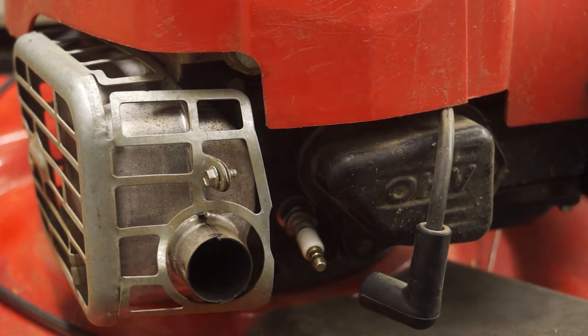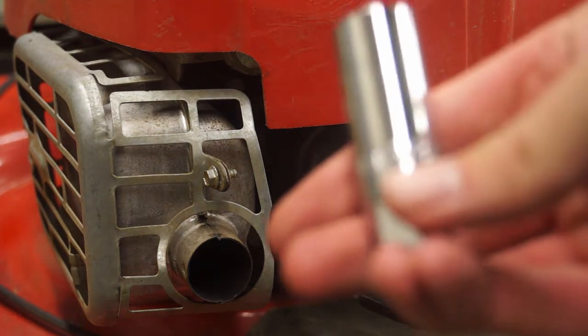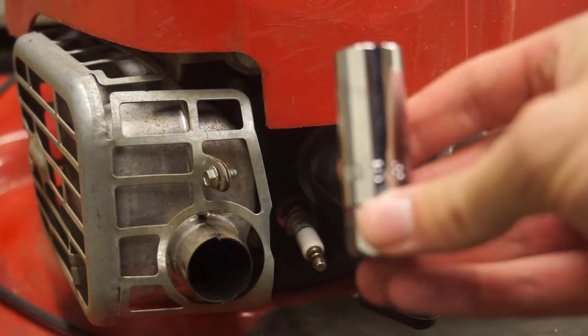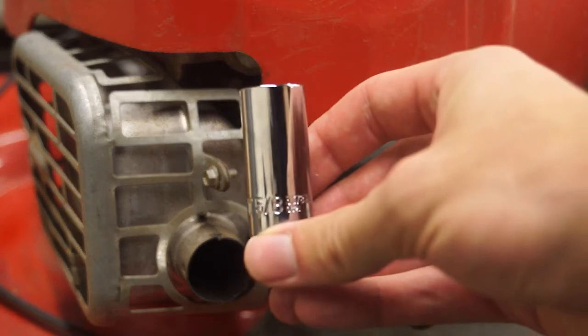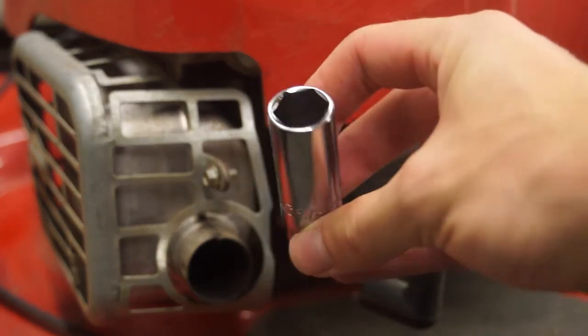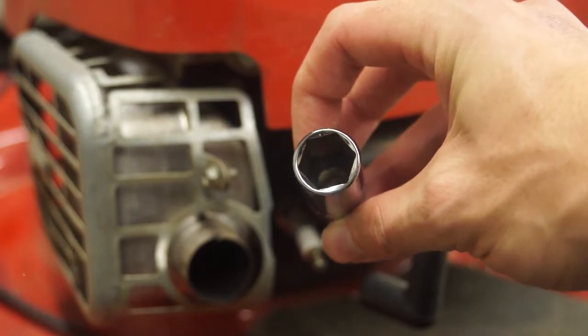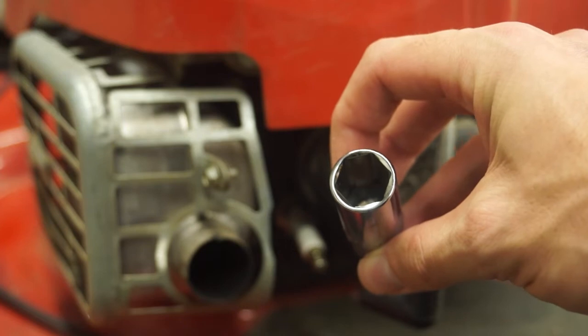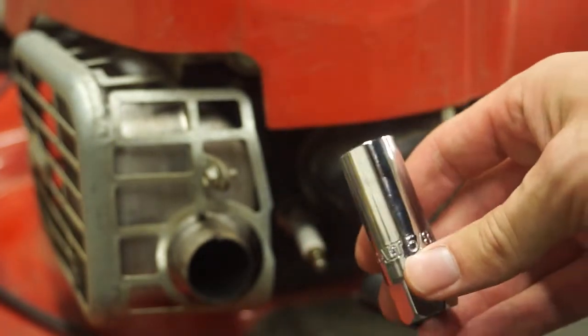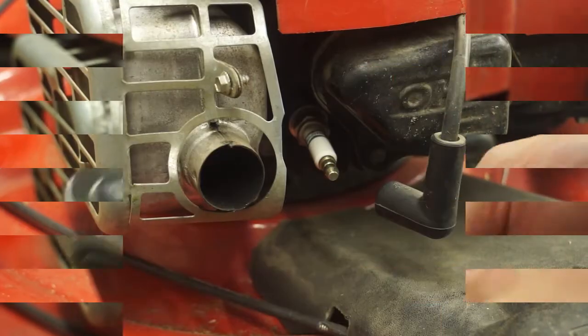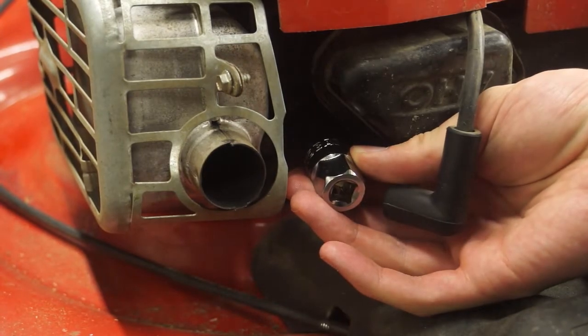They do make, and I happen to have, a special spark plug socket. This is a 5/8" socket. Inside of the socket there's a little rubber boot deep in there that you slide over the spark plug and then holds the spark plug while you turn it out. If you don't have this, you can of course use just a standard 5/8" socket, just be careful not to drop the spark plug. I'm going to slide this right onto my plug here, grab my ratchet.